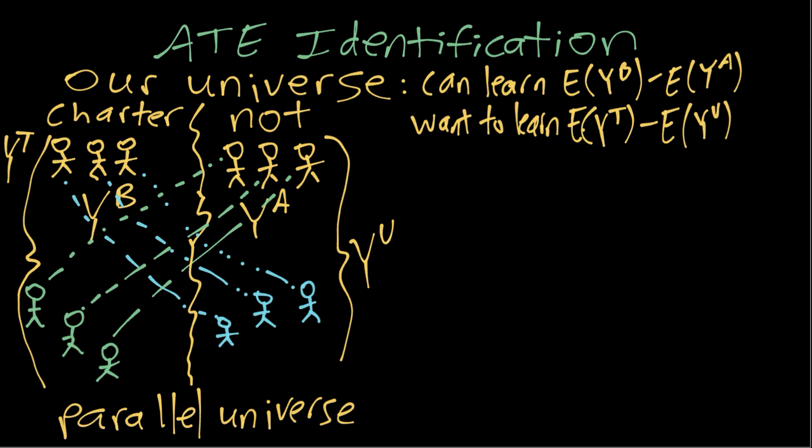So the identification question basically boils down to, are these two differences in means equal to each other or not? If they're equal to each other, that means that when we estimate the top one that only involves observable variables, we can interpret it as the second one, because they're equal. But if they're not equal, then we can still learn about the first one, but we can't interpret it with that causal meaning.